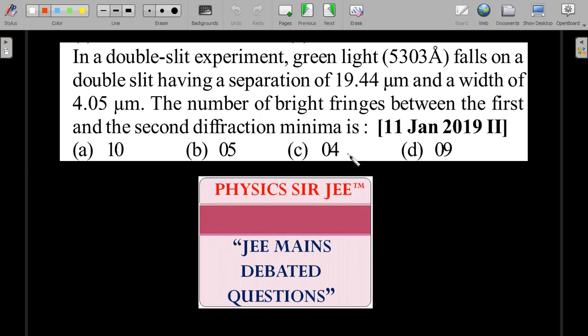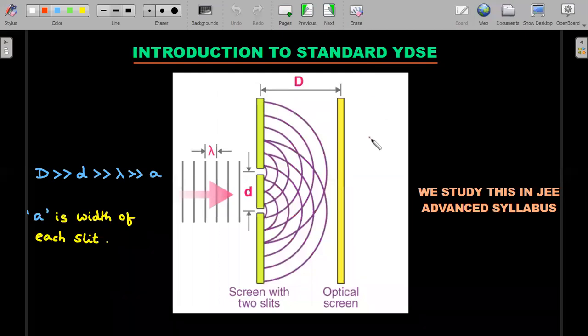Let's try to introduce ourselves for the uninitiated about the parameters that are going to use in this particular video, which is very standard. In a standard YDSE, there will be a double slit whose distance between the slits is small d, and the distance between the slit plane and the screen that you are going to use for the pattern to be observed is capital D. Plane wavefronts that are going to fall will have some wavelength of lambda, and the width of each slit is a small letter a. We study this in JEE Advanced syllabus.